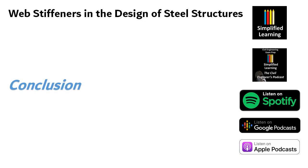In conclusion, web stiffeners are an indispensable component in the design of steel structures in the Indian context. Their purpose is to resist shear forces and improve the overall stability and load carrying capacity of beams and girders. The selection of appropriate stiffener types, proper spacing, and robust connection details are crucial to ensuring their effectiveness. Compliance with relevant Indian standards and codes, such as those issued by the BIS, is essential to guarantee safe and efficient construction practices. By incorporating well-designed web stiffeners, civil engineers can create steel structures that are durable, reliable and capable of withstanding varying loading conditions.